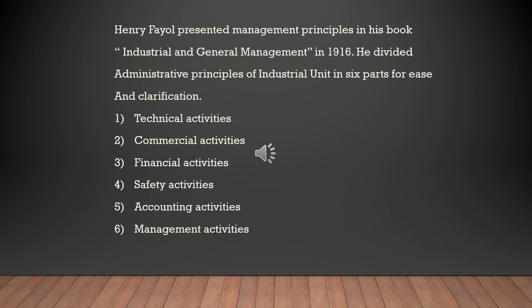Safety activities include safety of employees, safety of assets, safety of goods and raw materials. This activity is related to the protection of people and property in an organization by providing safe working conditions, insurance policies, etc.